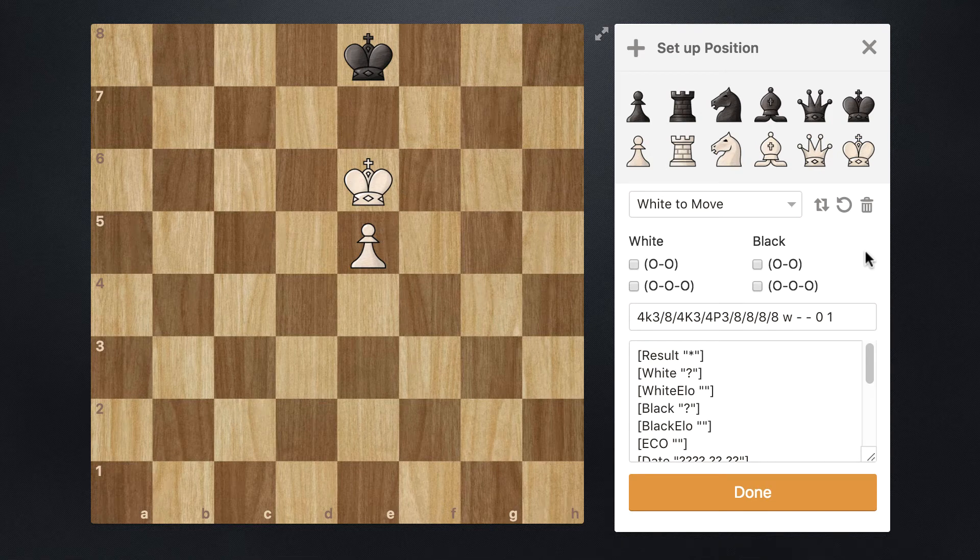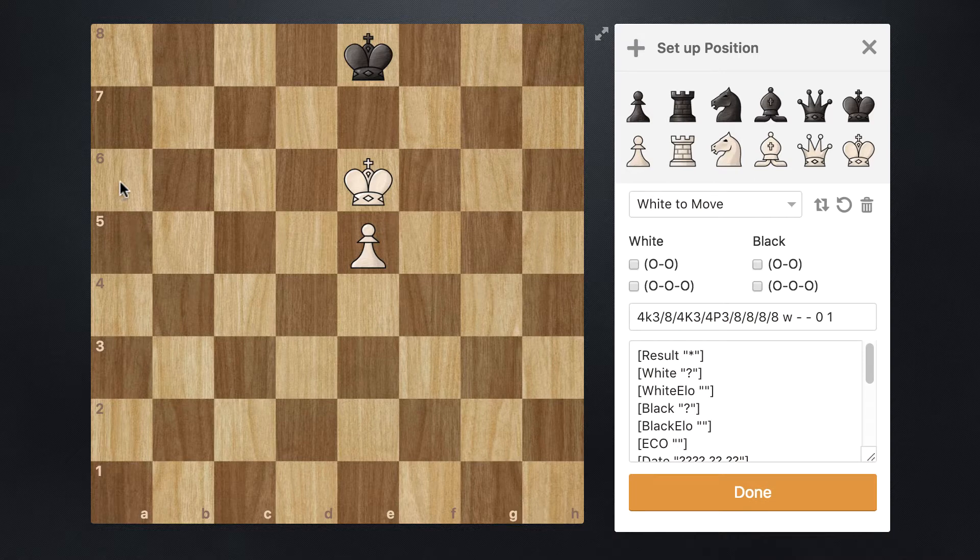What is going on guys? Welcome back to another chess lesson and in this video I'm going to be talking about the concept of king on the sixth and pawn on the fifth.